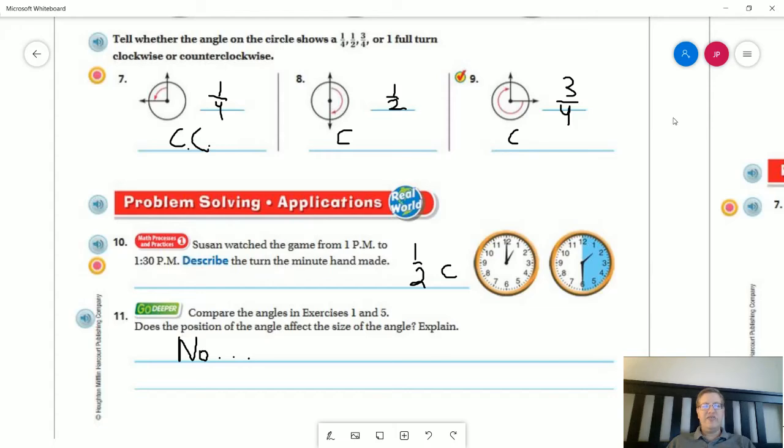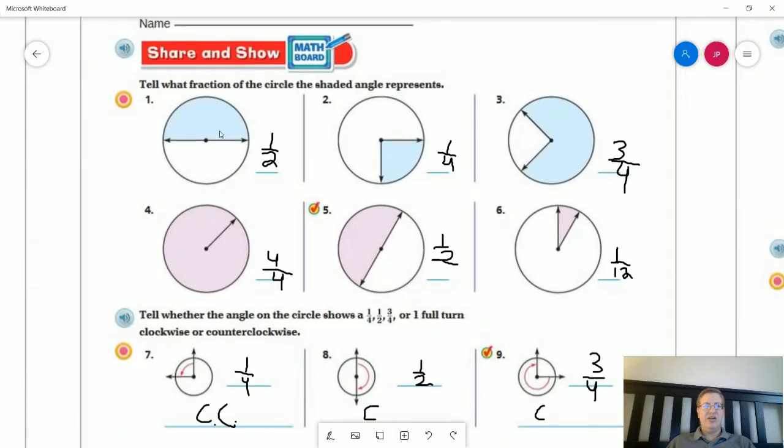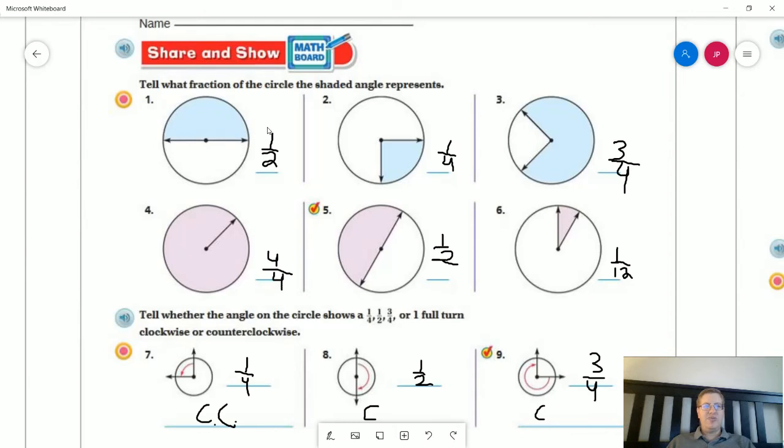So number 11, compare the angles in exercise one and five. Does the position of the angle affect the size of the angle? So we have one that goes this way. We have one that goes this way. They are both the same size.